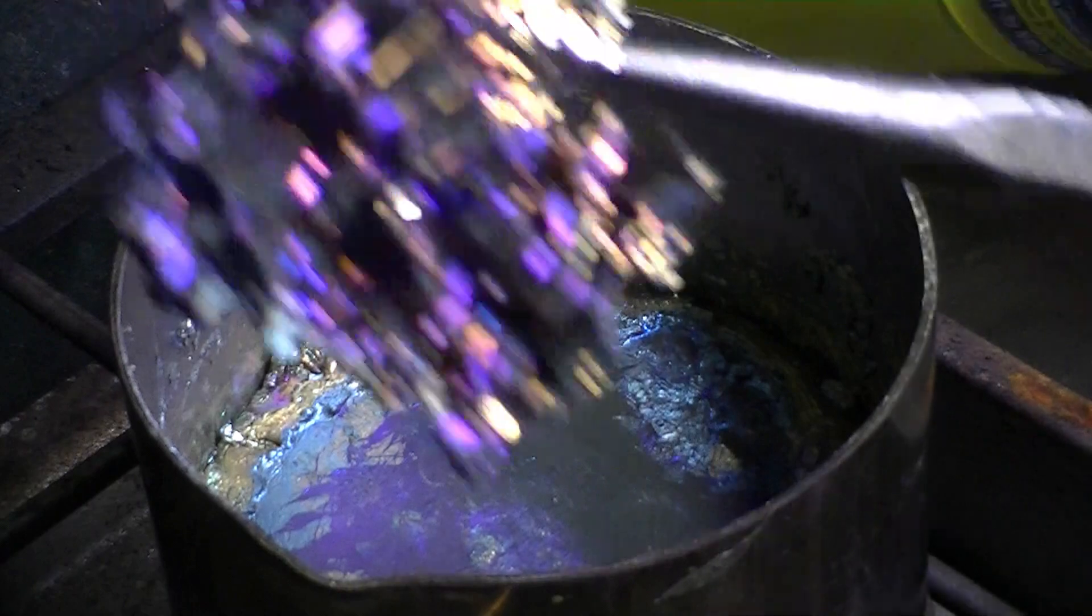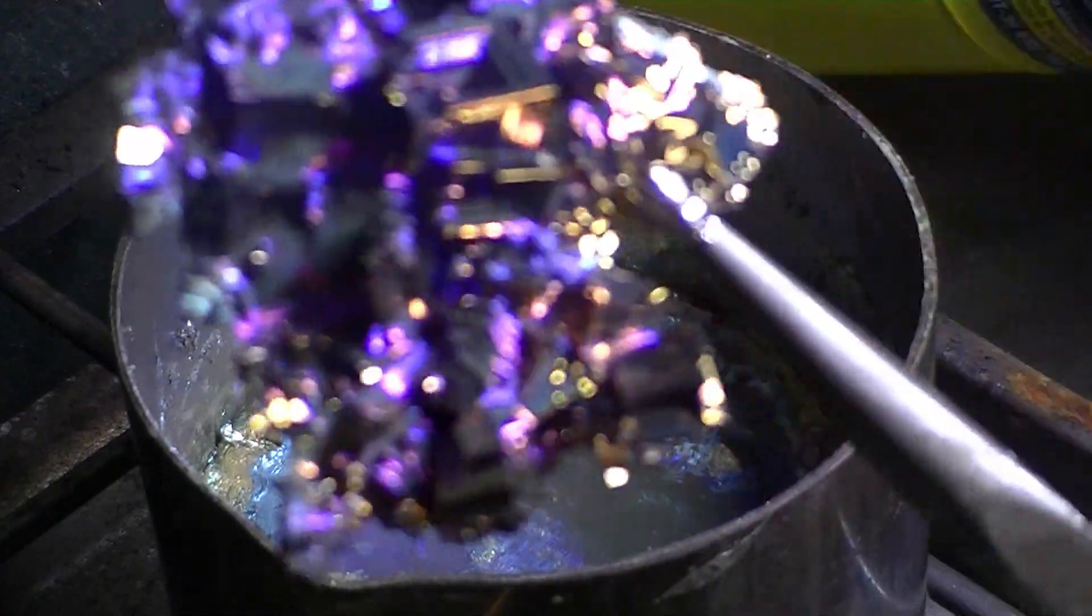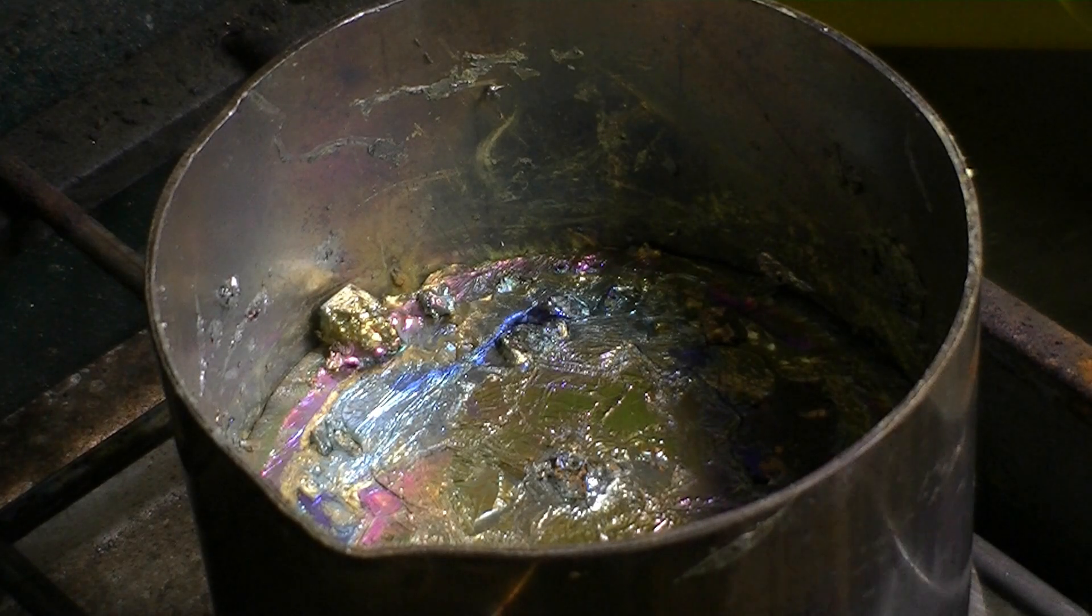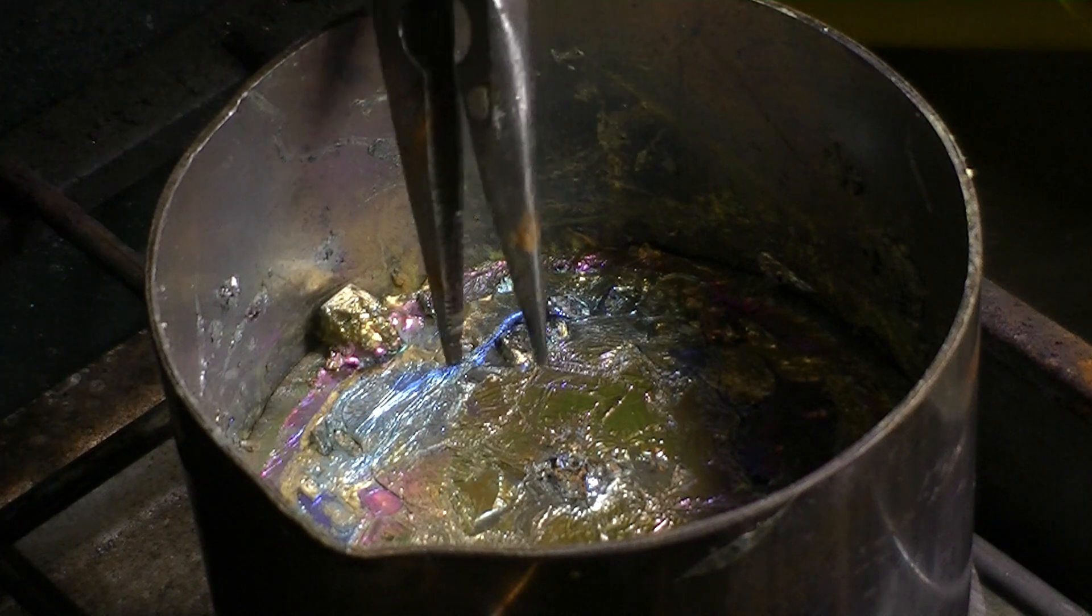The metal slowly tarnishes in air to give that purpley appearance. And with the metal so close to its melting point, it is very easy to remelt and pull another crystal.